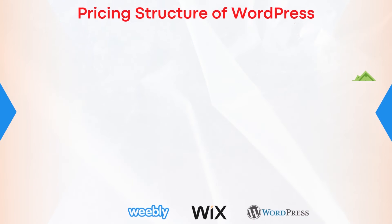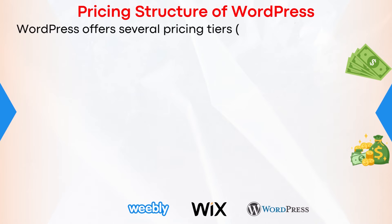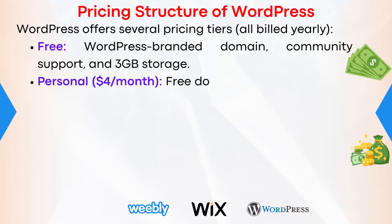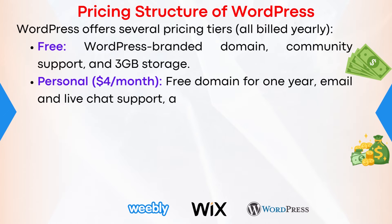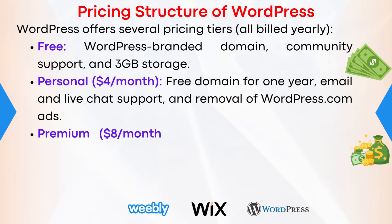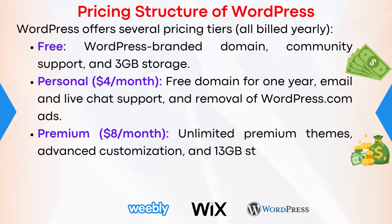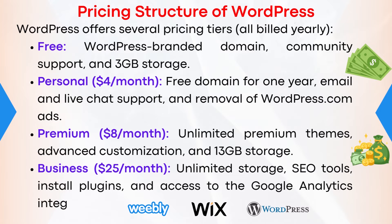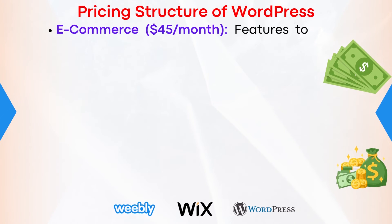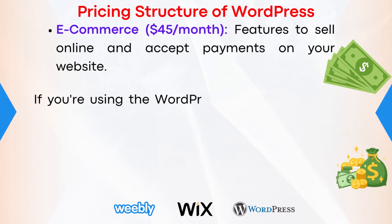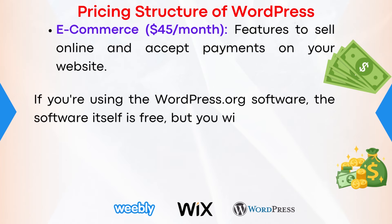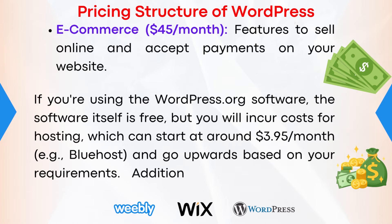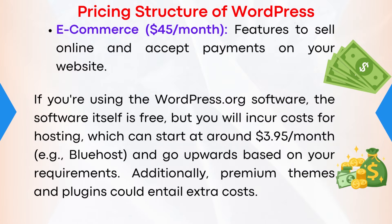Pricing structure of WordPress: WordPress offers several pricing tiers, all billed yearly. Free (WordPress branded domain, community support, and 3GB of storage); Personal at $4 per month (free domain for one year, email and live chat support, removal of WordPress.com ads); Premium at $8 per month (unlimited premium themes, advanced customization, 13GB of storage); Business at $25 per month (unlimited storage, SEO tools, plugin installation, and Google Analytics integration); E-commerce at $45 per month (features to sell online and accept payments). If using WordPress.org software, the software itself is free but hosting starts at around $3.95 per month with Bluehost, with additional costs for premium themes and plugins.